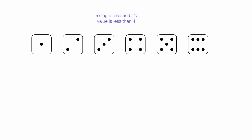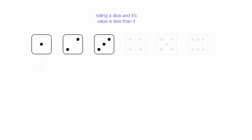Event B is rolling a dice and its value is less than 4. It could be a 1, a 2, or a 3. There's a 1 in 6 chance for each of these as well, and adding these up equals 3 sixths, or 1 half.